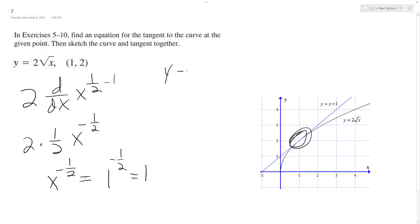So using the point slope form, y minus 2 is equal to 1 times quantity x minus 1. I get y minus 2 is equal to x minus 1 plus 2 plus 2. Y is equal to x plus 1.